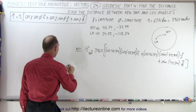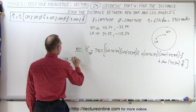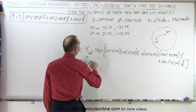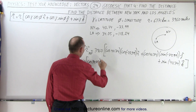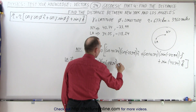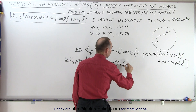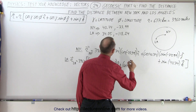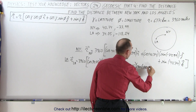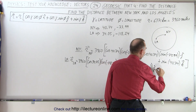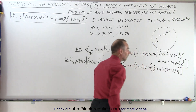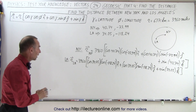Now let's do the same for Los Angeles. The position vector for LA equals 3,960 miles times: the cosine of 34.05 times the cosine of minus 118.24 in the I direction, plus the cosine of 34.05 times the sine of minus 118.24 in the J direction, plus the sine of 34.05 in the K direction. There we have the two position vectors, one for New York and one for LA.